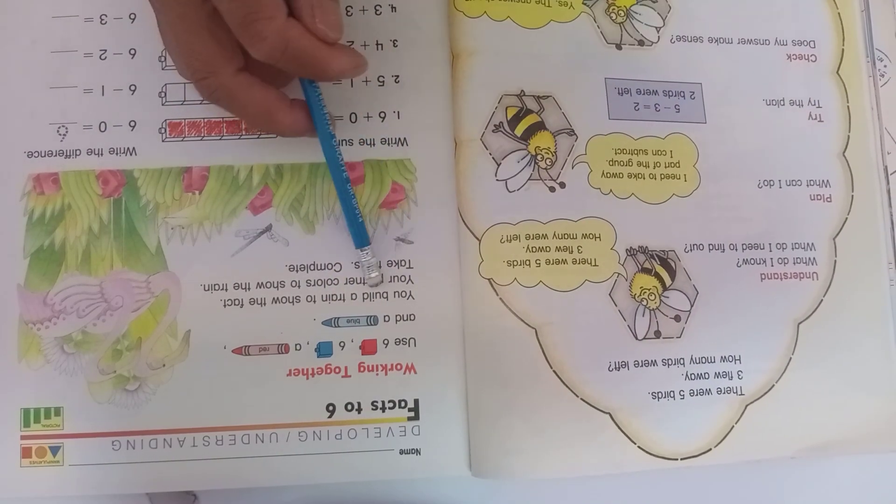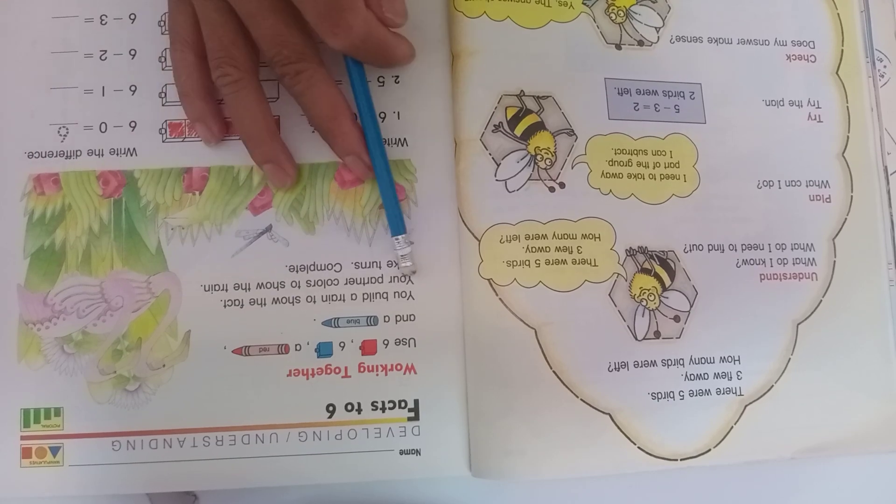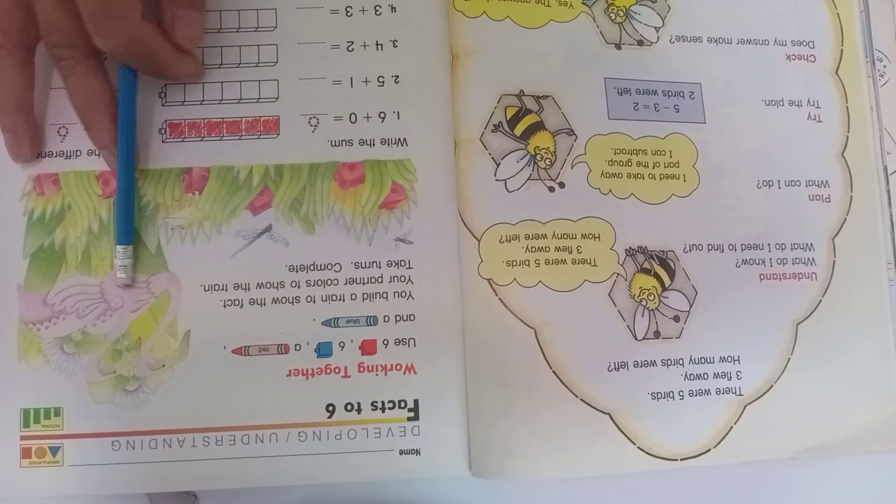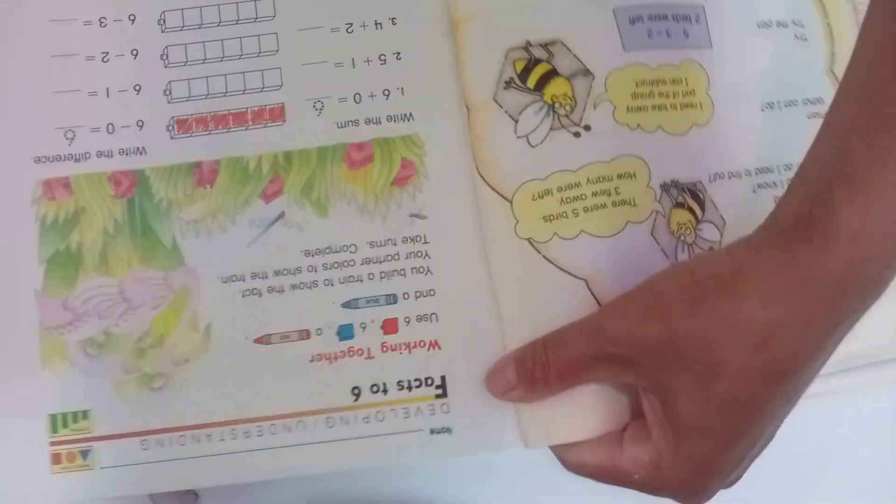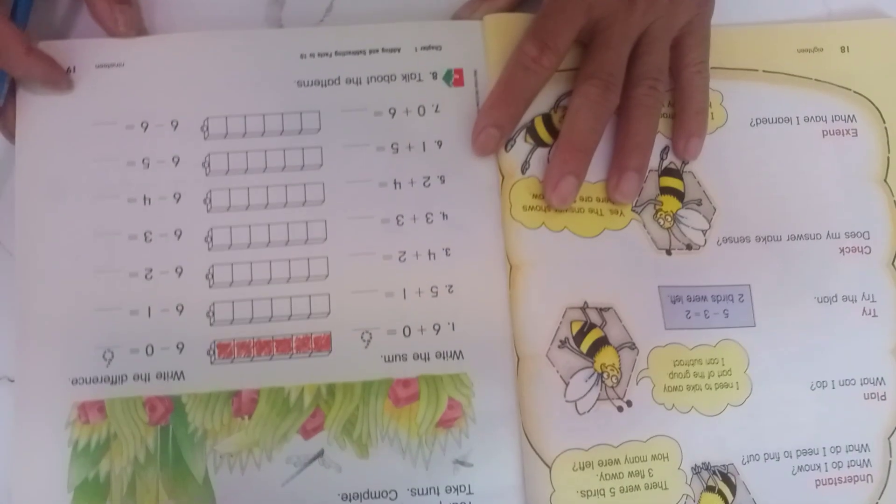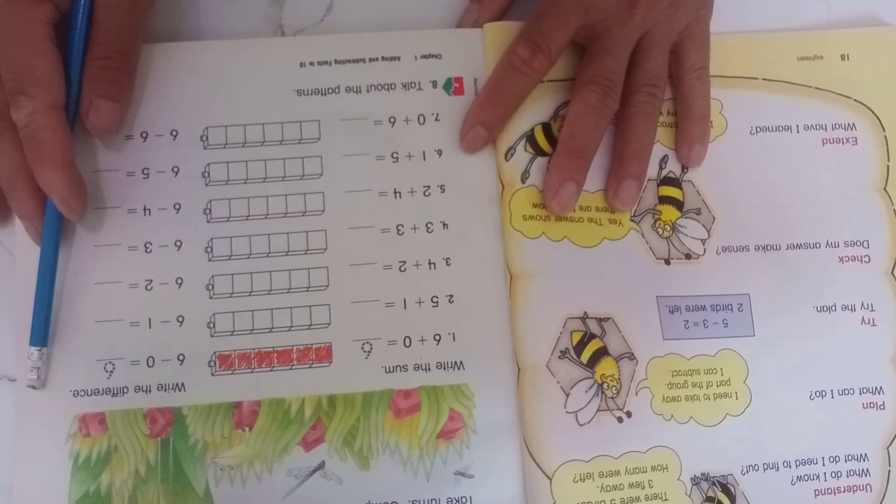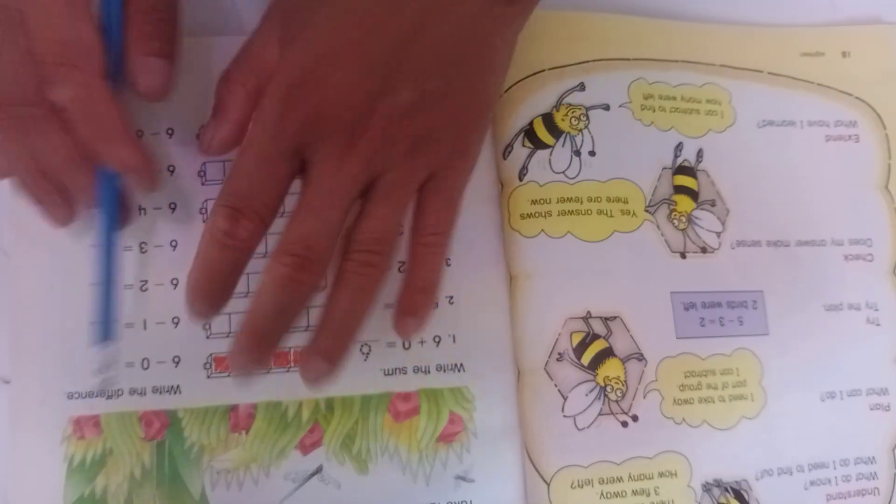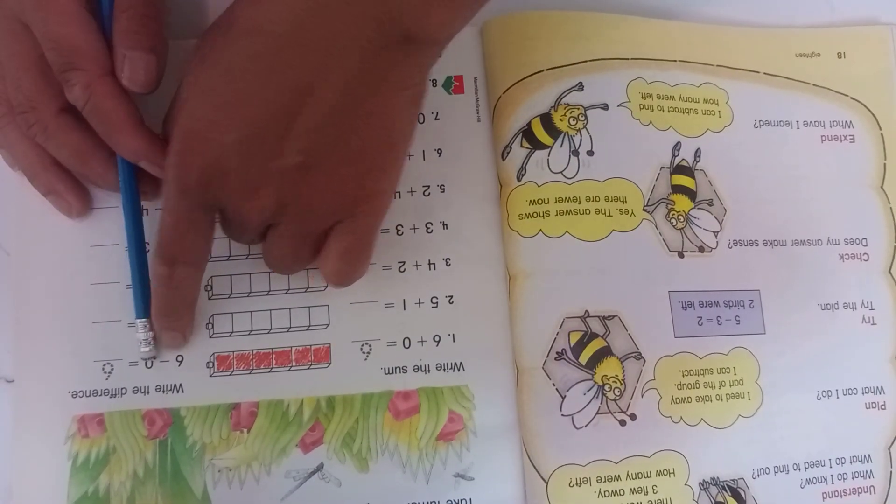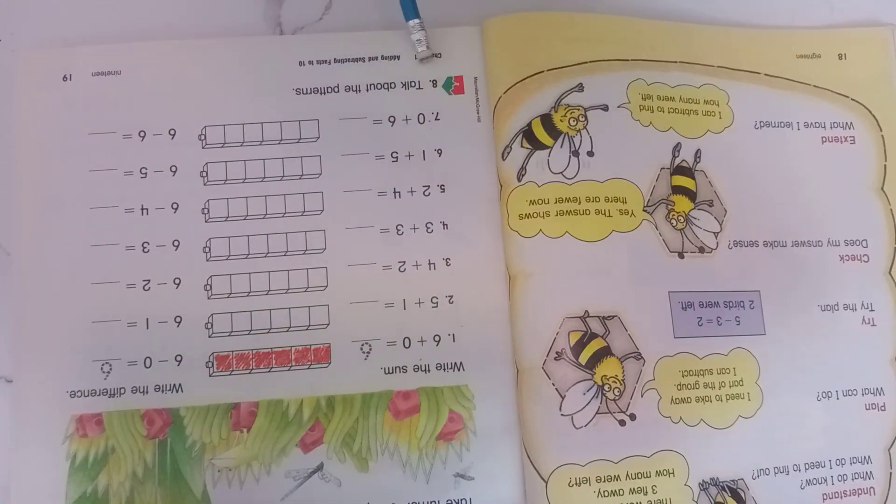Build a train into the frame. Color to show the train in each square. Continue, write the sum and write the difference in the frame. Number one, two, three, four, five, six, seven. So now, six plus zero equals six.